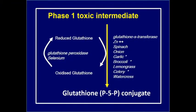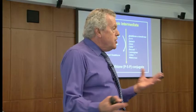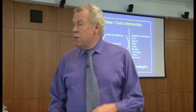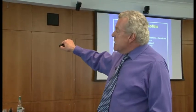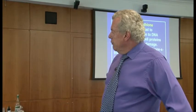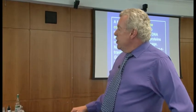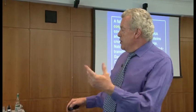Look at the foods that stimulate glutathione: spinach, onions, garlic, broccoli, lemongrass, celery, and watercress. You can make a soup or a dish of those to help. Not difficult when you look at those — you think, oh yeah, I could incorporate that. Put that into the diet and test the person for zinc. Those would be the foods you could bring in.